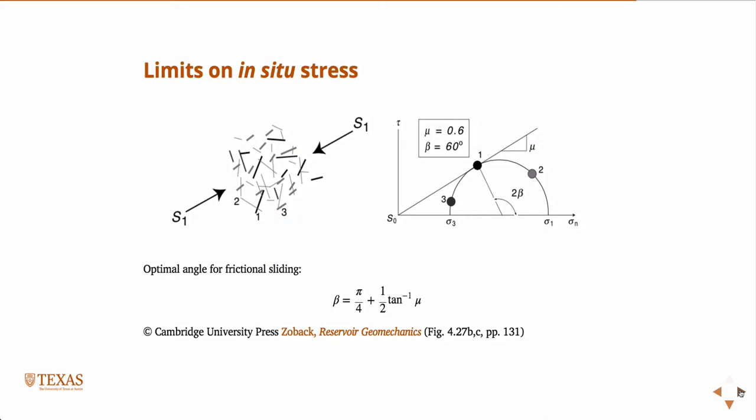And so then with that, we can come up with some limits on this issue of stress from this idea. So if you have part of the Earth, and these here are just idealized fractures that are randomly distributed, only some of those are going to be oriented in such a way that they're going to accommodate slip. For example, if I have a fracture that's perfectly normal to S1, this is never going to slip, no matter what I do.